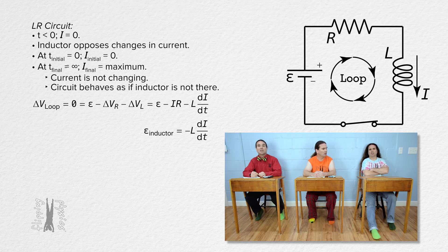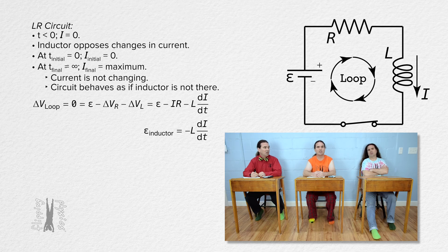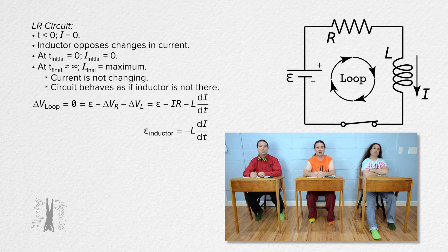I thought the induced EMF across an inductor equaled the negative of inductance times the time rate of change of current. Why did you not include the negative when substituting in the equation for electric potential difference across the inductor? Because we already showed the electric potential difference across the inductor goes down in the direction of increasing current in the Kirchhoff's loop rule equation. If we included the negative from the induced EMF equation, that would make the electric potential across the inductor go up, which does not make sense. We already included the direction.